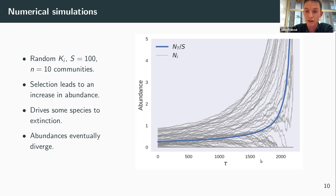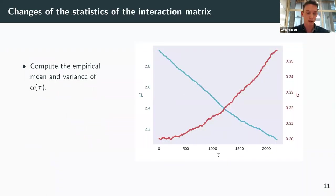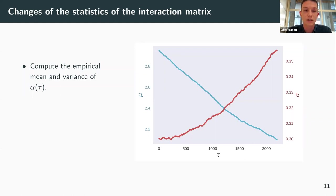Except for some species that go extinct, there is a general increase. After a certain number of generations, some abundances eventually diverge, but this is a limitation of the Lotka-Volterra model. My main question was to see how the interactions change under artificial selection for total abundance. At every generation, we look at the statistics of the interaction matrix and compute the empirical mean and variance of alpha at generation tau to recover parameters mu and sigma.